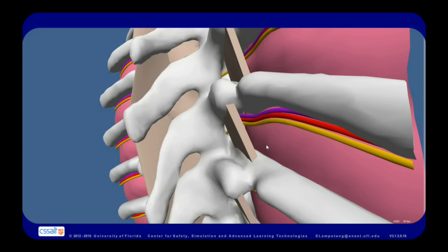There are four main borders within the thoracic paravertebral space. As shown here, anteriorly there is the parietal pleura, posteriorly there is the superior costo-transverse ligament. The paravertebral space is sandwiched between the superior and inferior boundaries, which are the heads and necks of the ribs.